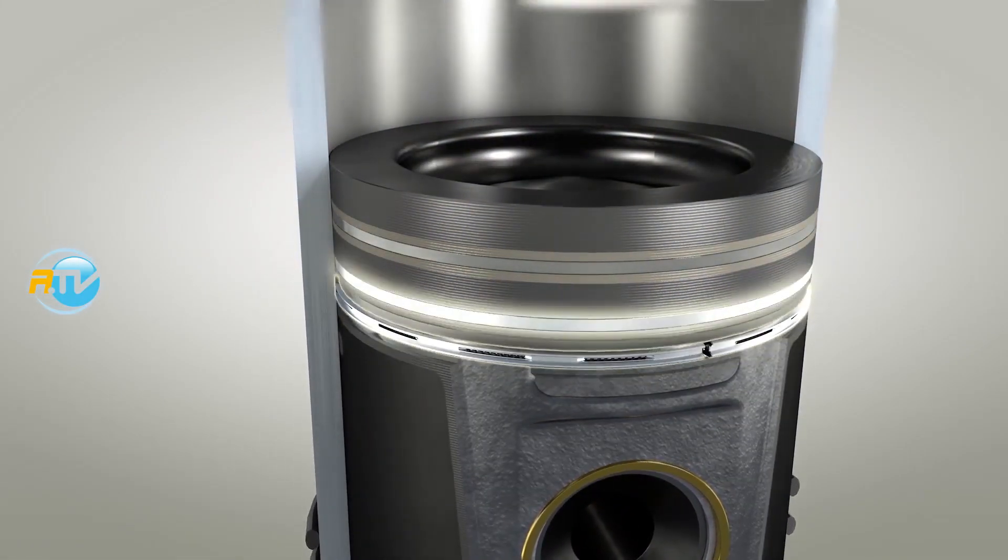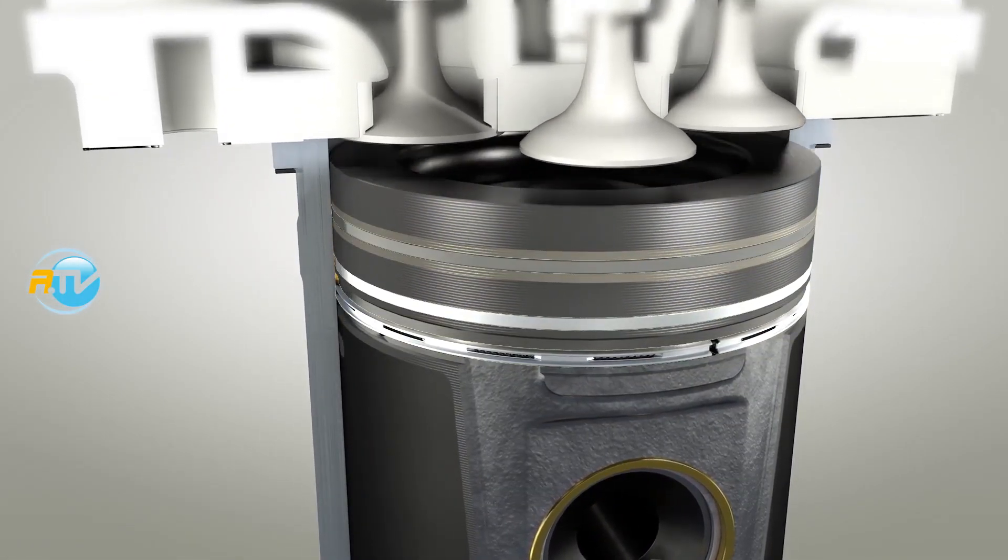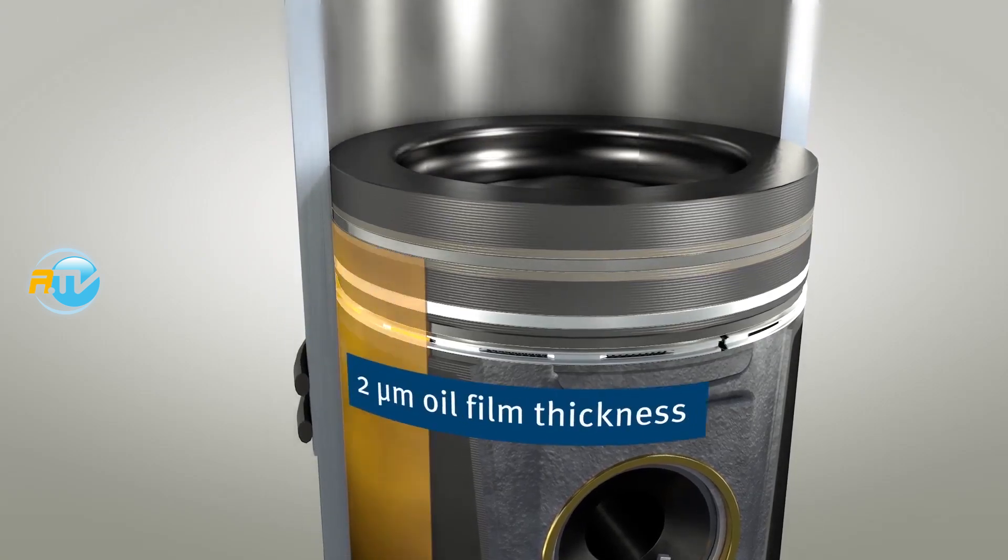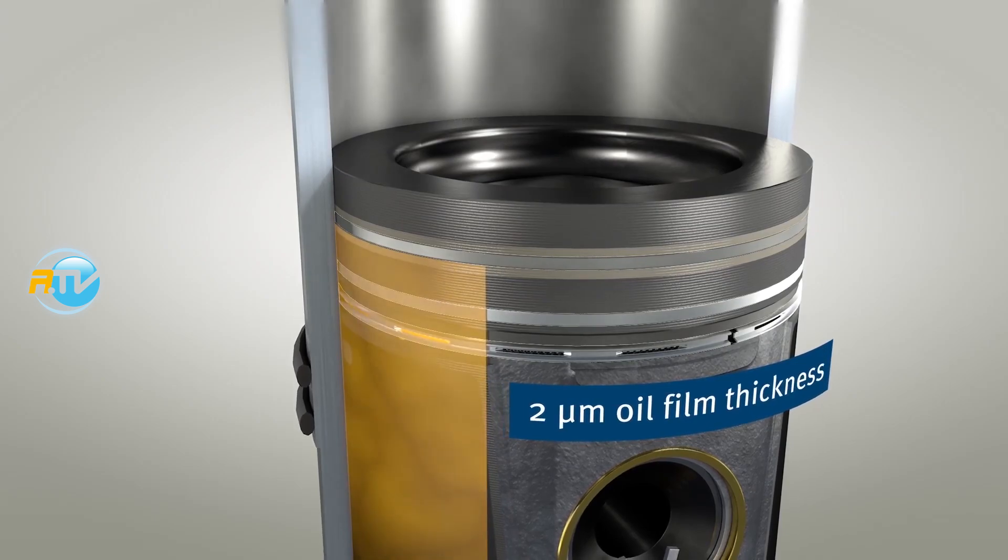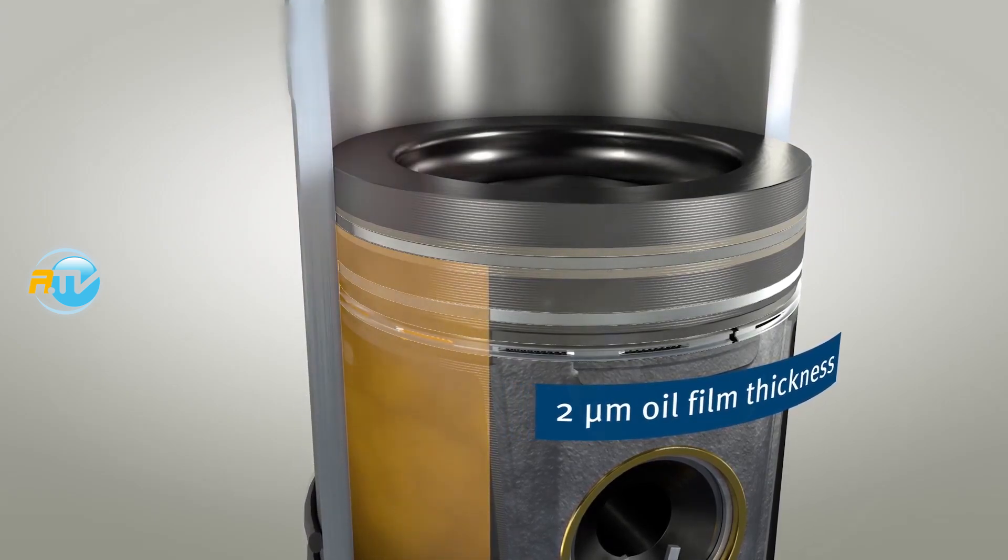If we are talking about oil in the walls of the cylinder, in reality it is a film about two microns thick that takes care of lubricating the piston. As you can see, above the top ring there is practically no oil, and in reality the zone that is above the top ring should never touch the walls of the cylinder.